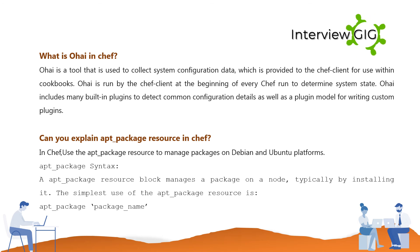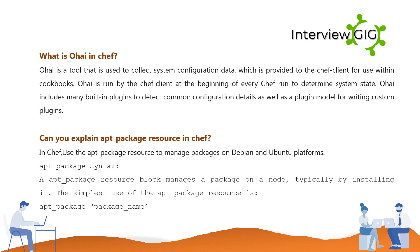What is Ohai in Chef? Ohai is a tool used to collect system configuration data, which is provided to the Chef client for use within cookbooks. Ohai is run by the Chef client at the beginning of every Chef run to determine system state. Ohai includes many built-in plugins to detect common configuration details, as well as a plugin model for writing custom plugins.